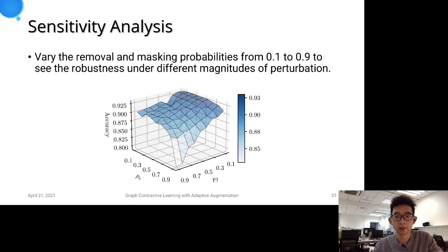Last, we investigate the impact of critical hyperparameters, namely, removal probabilities that control the generation of graph views. The plot shows the model performance with varied removal probabilities from 10% to 90%. It is seen under different magnitudes of perturbation, our model performs steadily as long as the parameters are not set too large.